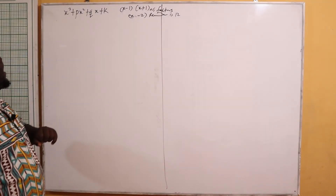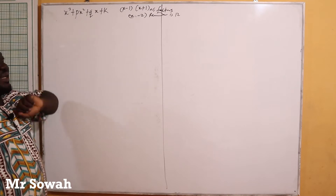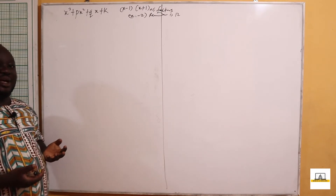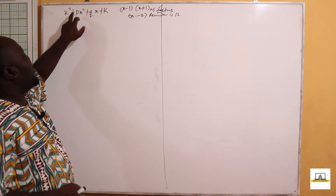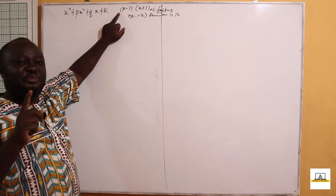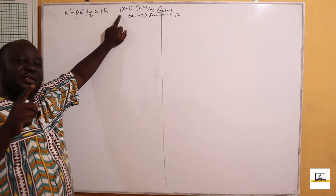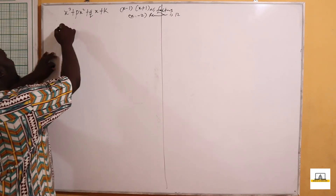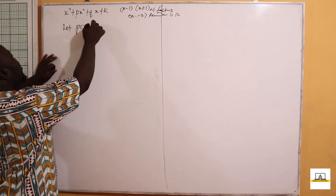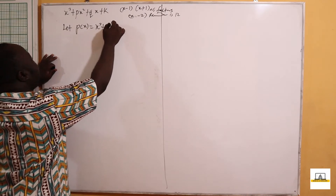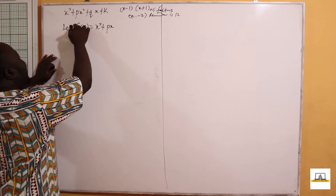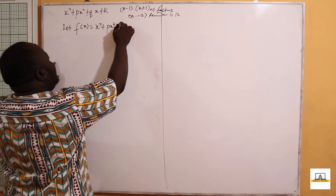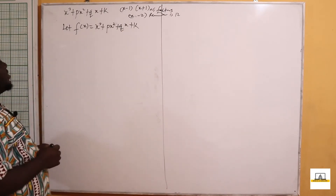In the cubic function we are told that x cubed plus px squared plus qx plus k has x minus 1 and x plus 1 as factors. If x minus 1 is a factor, it means that if we divide this expression by x minus 1 we get a remainder of zero. Let f of x be equal to x cubed plus px squared plus qx plus k.